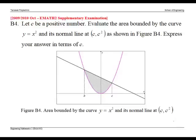This question requires us to find the area of the shaded region. The important information given here is that the straight line is the normal line at c comma c squared. We need to find the equation of the straight line. We already have the point on the line. What we need now is the gradient of the straight line.